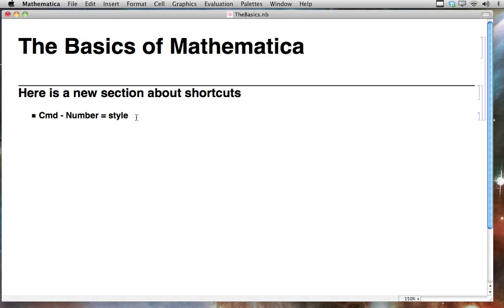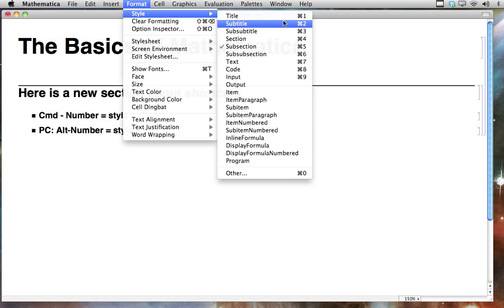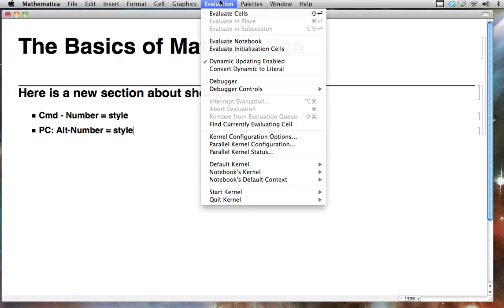So let me try that with a shortcut key. If I go down and I hit command 5, sure enough, it gives me another bullet. On a PC, this is alt number to give me my style. And you can see all the different shortcuts that Mathematica has by coming over to the thing, and you can see in the menus what all the shortcuts are.